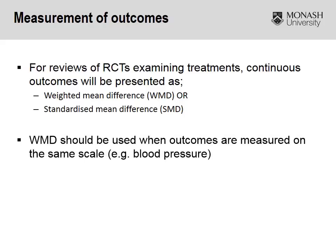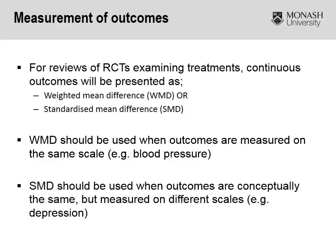Weighted mean difference is used when the outcomes are measured on the same scale, such as blood pressure. Standardized mean difference, on the other hand, is used when we standardize the outcomes because they're conceptually the same but measured on different scales — an example might be pain or depression, where one scale measures it 1 to 10 and another 1 to 4. By standardizing that measure, we're able to get a much more robust result.